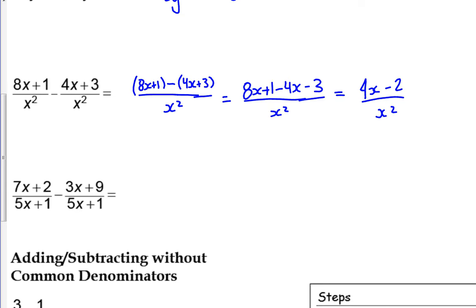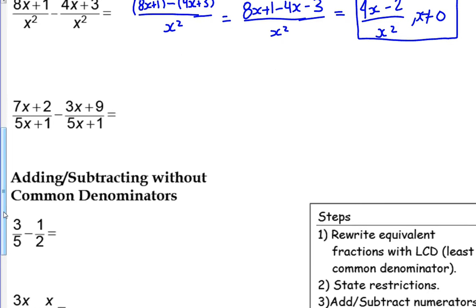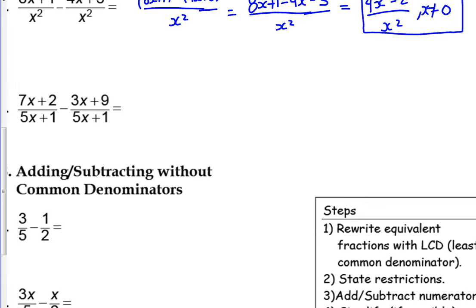We instead would have 8x plus 1, and then instead of minus 4x with the brackets, I could write this as distributing the negative minus 4x minus 3. The signs both switch. And then adding them together, we still get 4x minus 2. Are we done? x can't be what? 0. So when the denominators are already the same, so easy. Chances are, will it be that way? No. Can you try number 4?